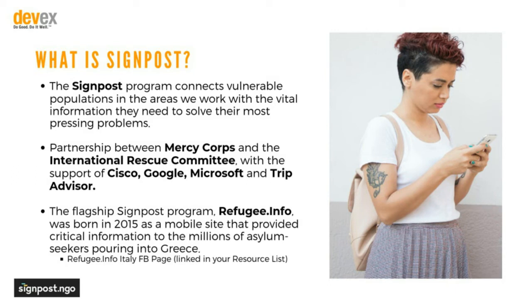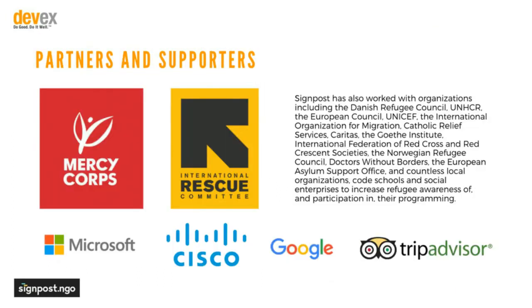The first instance of Signpost was called Refugee.info. It started in 2015 in Greece — a very simple mobile app people could download that provided them with simple service information: how to register in a camp, where they were, and what basic services were available. It worked both on and offline. Another big strategy we use is partnerships. We conduct service mapping, working with local actors, other INGO actors, and government actors to provide a comprehensive information experience so users can go to a single place for what they need.